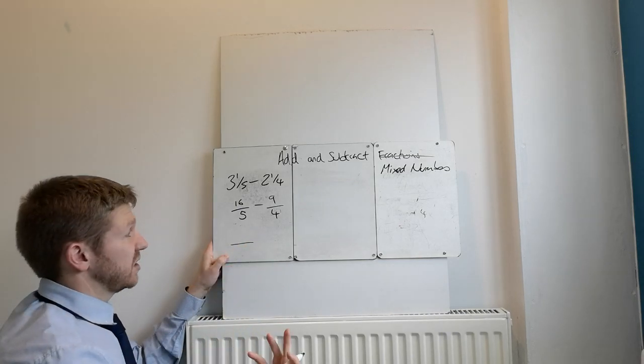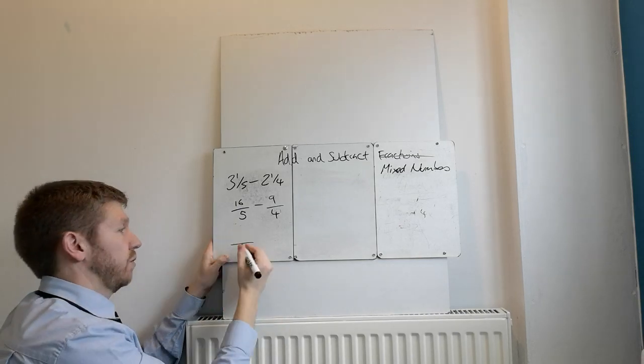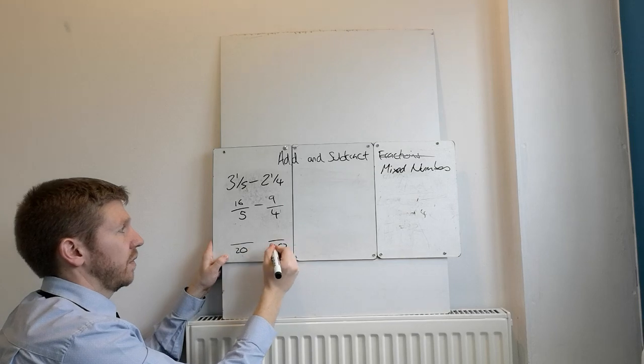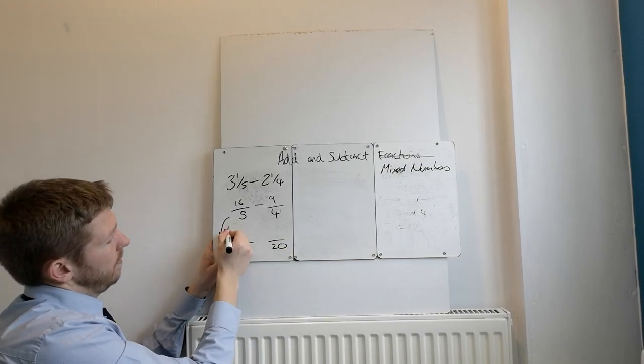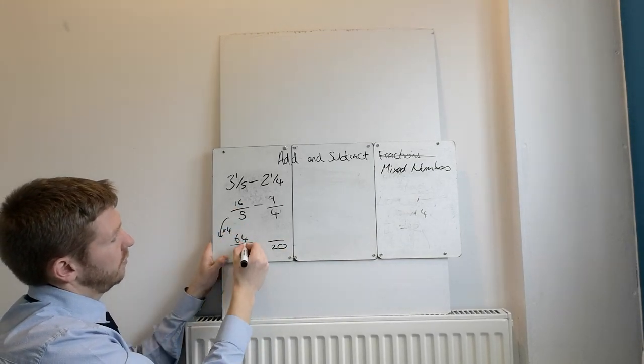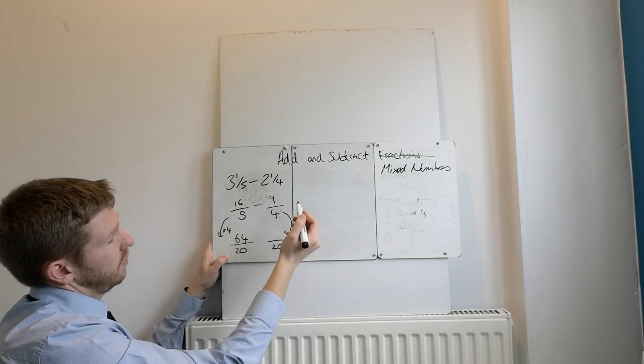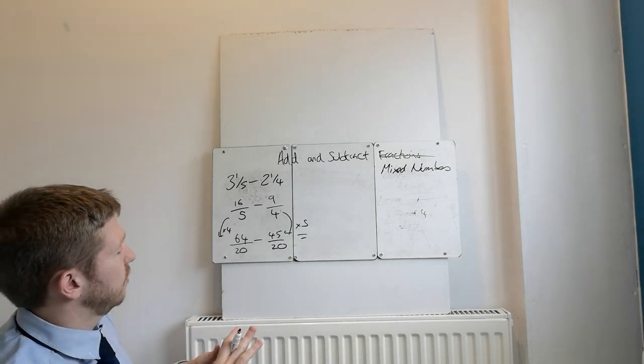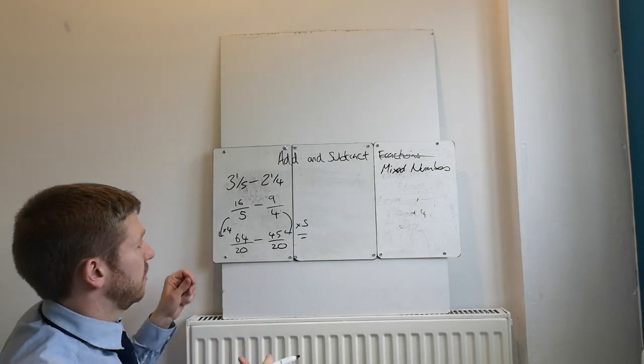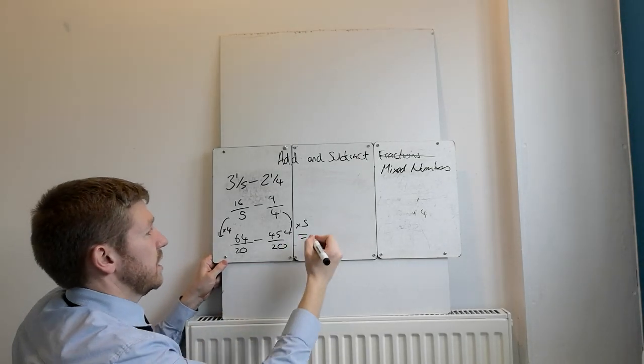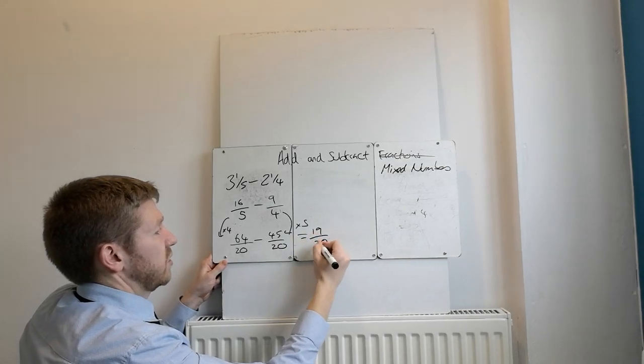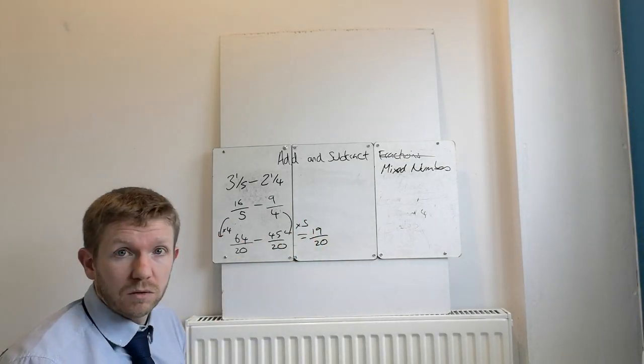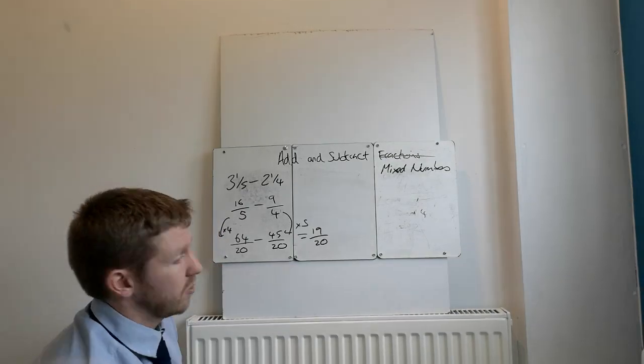5 and 4, they go into 20, 40, 60, any of those. I would choose 20, it's the lowest. You've times that one by 4. 16 times 4 is 64. You times this one by 5. 9 times 5, 45. You subtract them. 64 take away 45. Is it 19 over 20? Yeah, I think it is. 19 over 20. The good thing about that is it's not going to be an improper fraction.